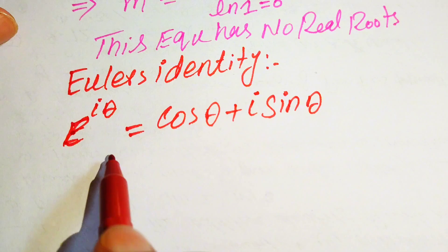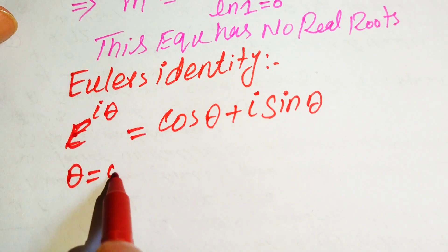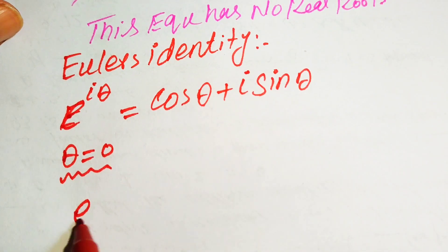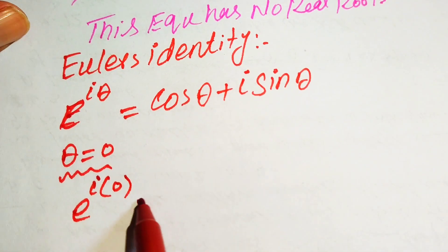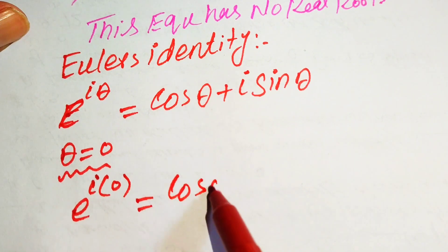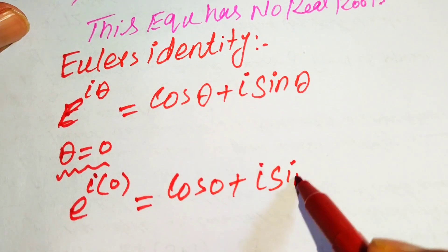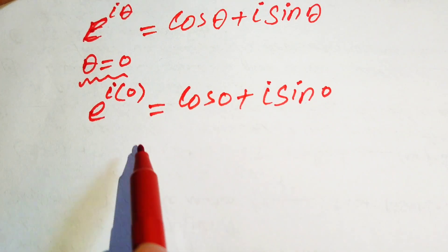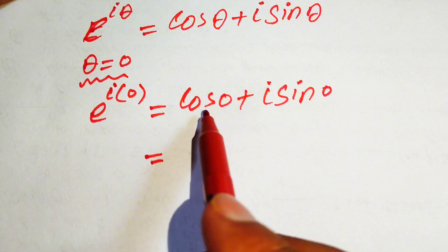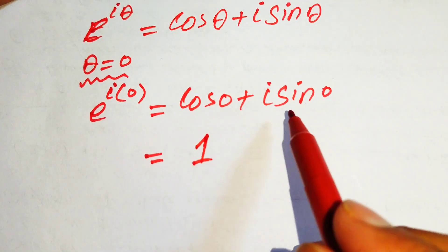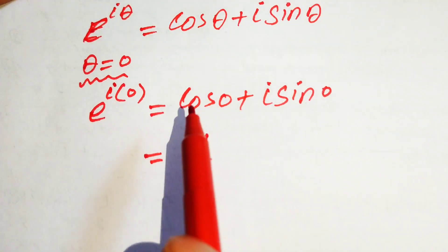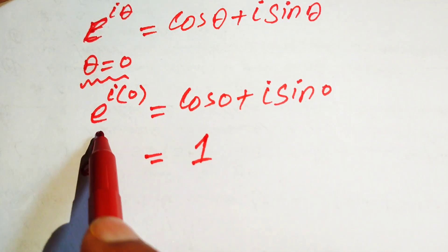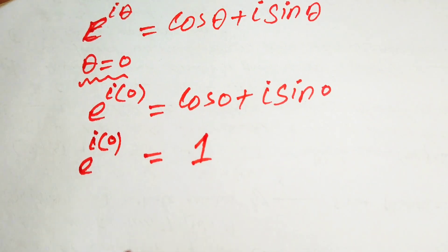We check Euler's identity for theta equals 0. Substituting theta equals 0 gives e to the power of iota times 0 equals cos 0 plus iota sin 0. Since e^0 equals 1, cos 0 equals 1, and sin 0 equals 0, we get e to the power of iota·0 equals 1.